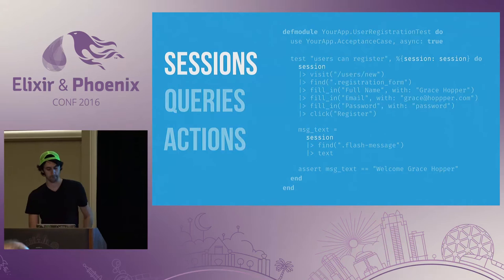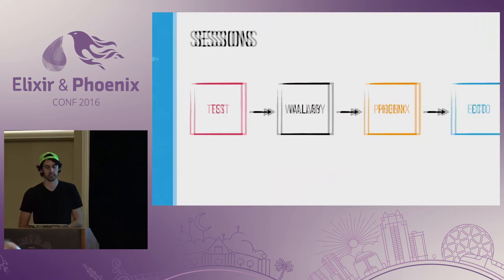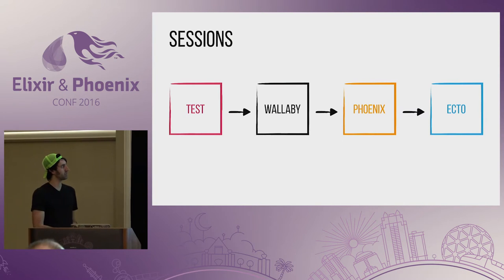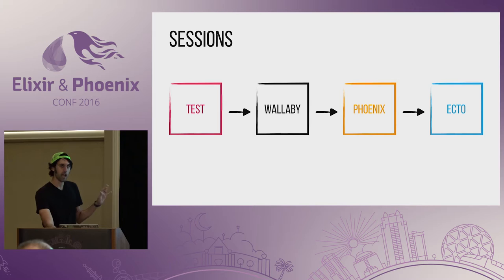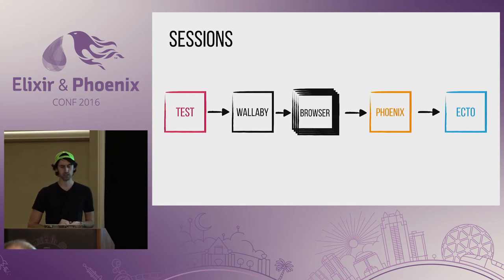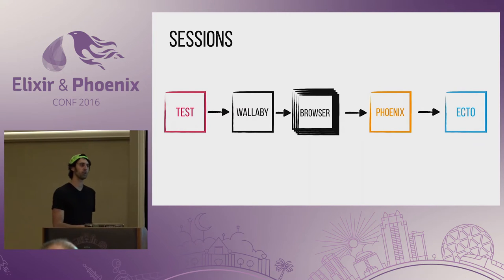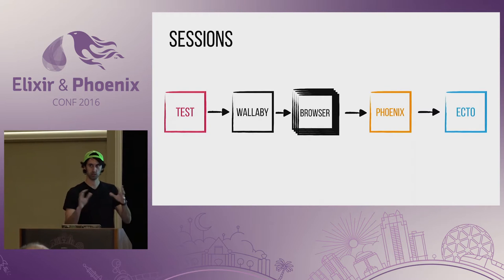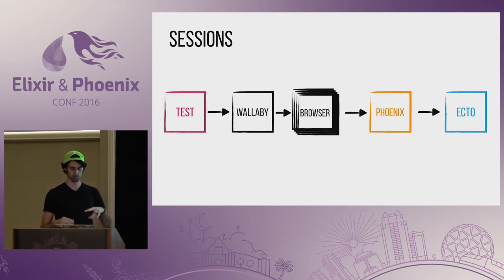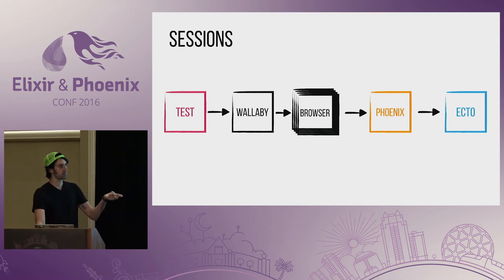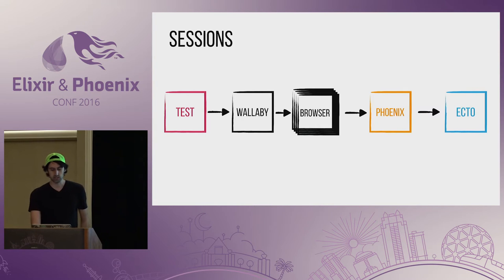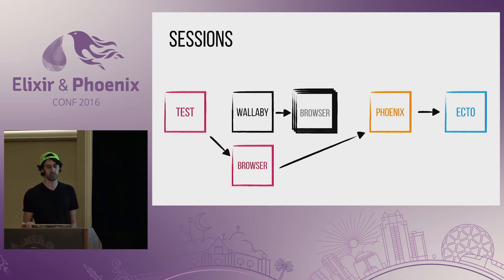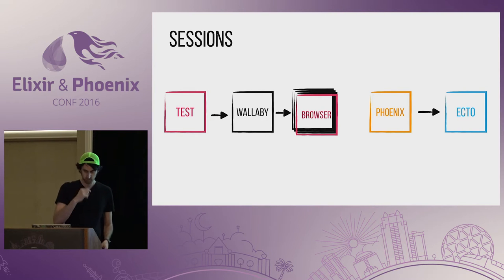A test session typically looks something like this. We start with a test. That test talks to Wallaby. Wallaby talks to Phoenix. Phoenix talks to Ecto. And then you get data back eventually. What's actually happening under the hood is Wallaby is managing a pool of browsers for you. Right now it's a pool of PhantomJS instances. Coming soon will be support for Selenium and Chromium. We use Poolboy to actually manage this pool. When you want to start running a test, you tell Wallaby to give you one of those browsers, that browser talks to Phoenix, and when you're done, you put it back in the pool.